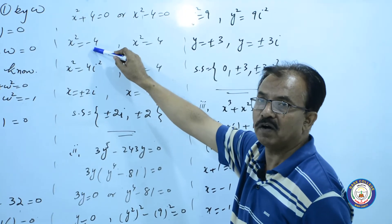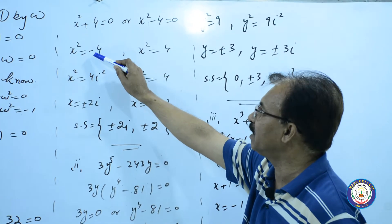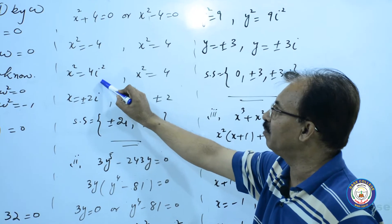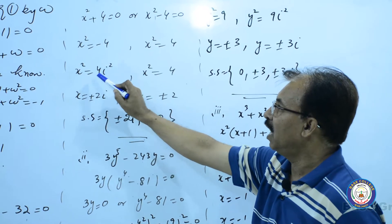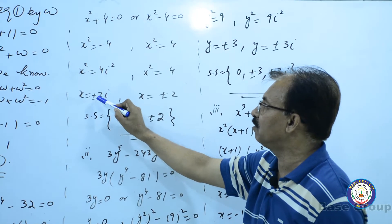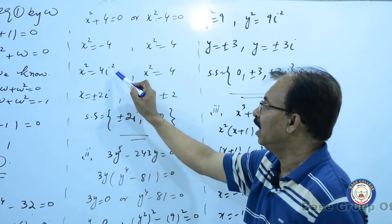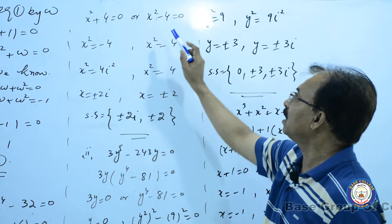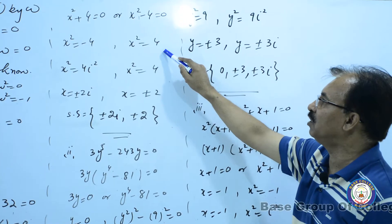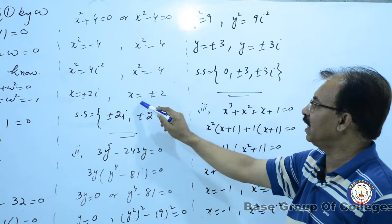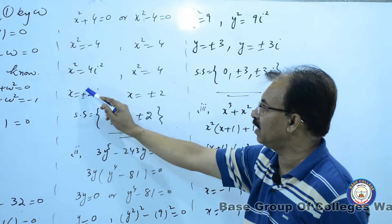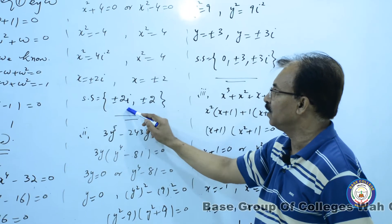اب یہ دو parts equal to zero ہیں، دونوں کو individual equal to zero لیا۔ plus four ادھر آ کے minus ہو گیا۔ minus کا root solve نہیں ہوتا، complex میں چلا جائے گا۔ negative one کی جگہ iota square place کیا۔ دونوں طرف root لیا تو x is equal to plus minus four کا root دو آ گیا اور x is equal to plus minus two آ گیا۔ تو solution set آپ کے plus minus two i اور plus minus two ہے۔